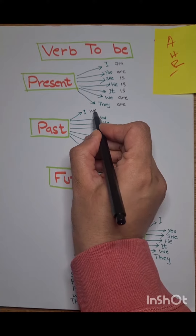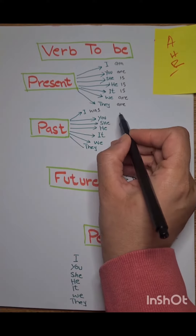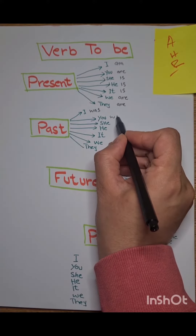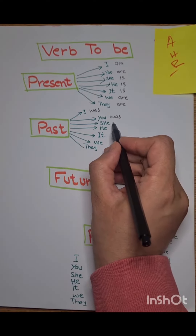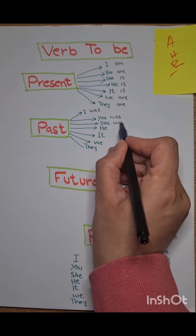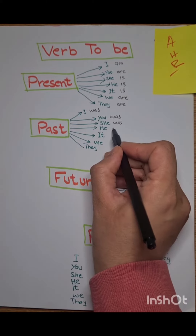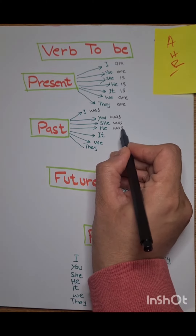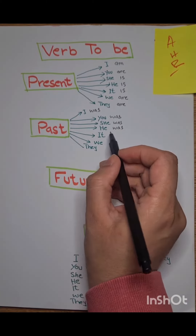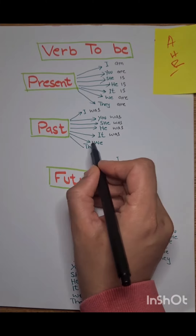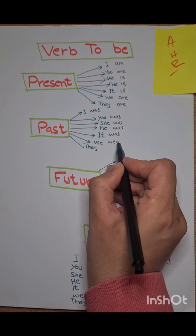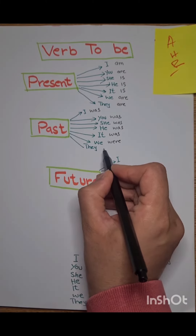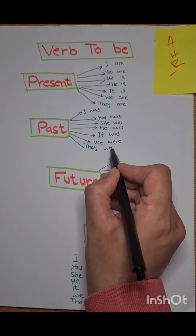In past: I was, you was, he was, he was, it was, we were, they were.